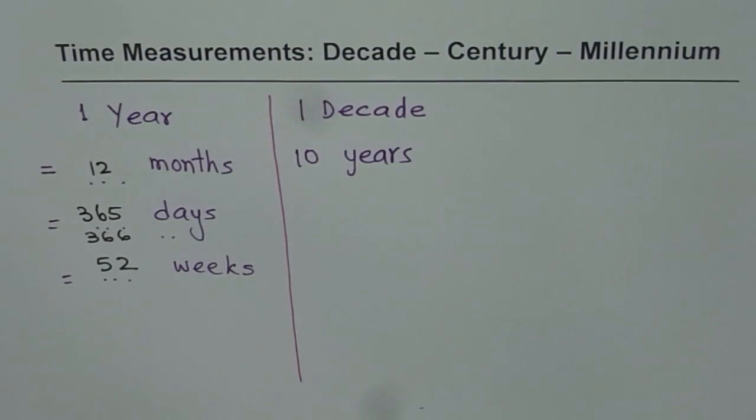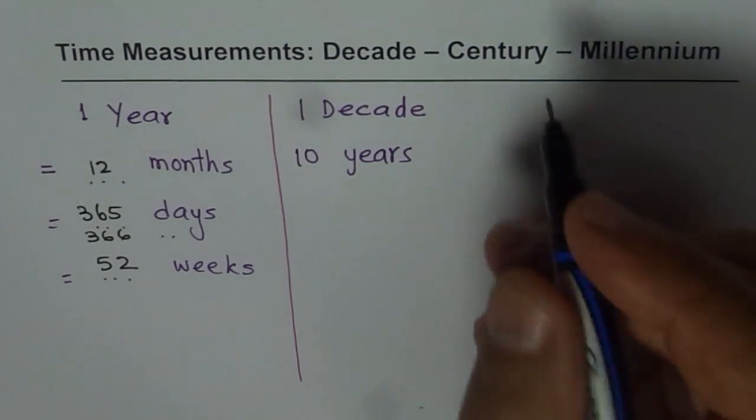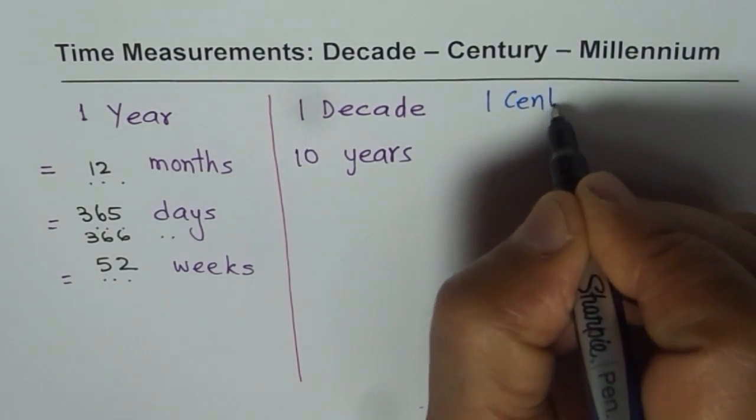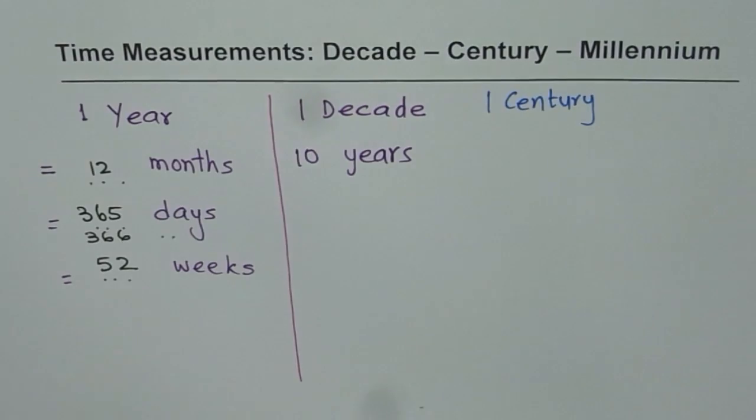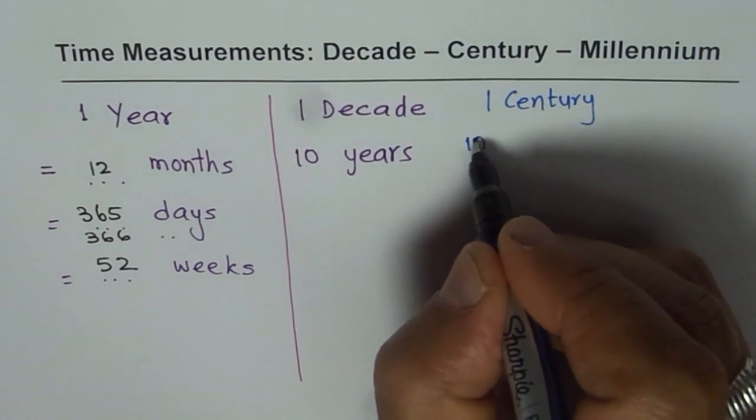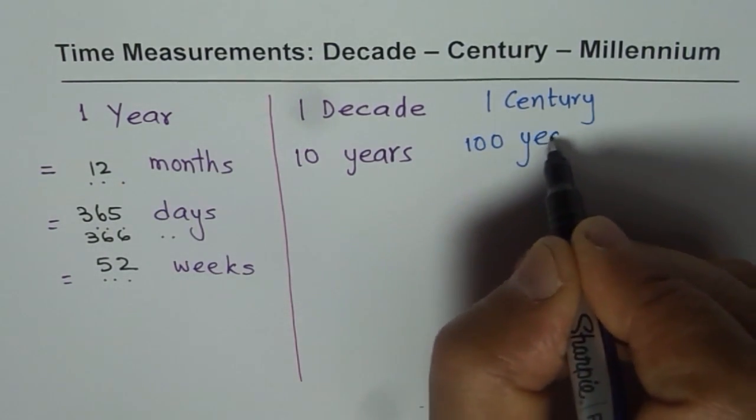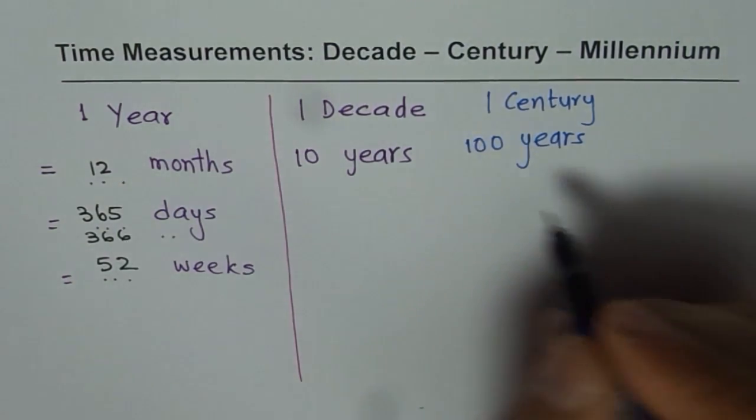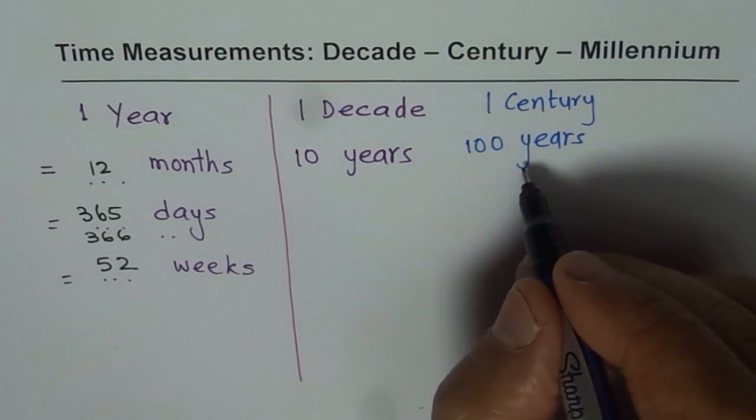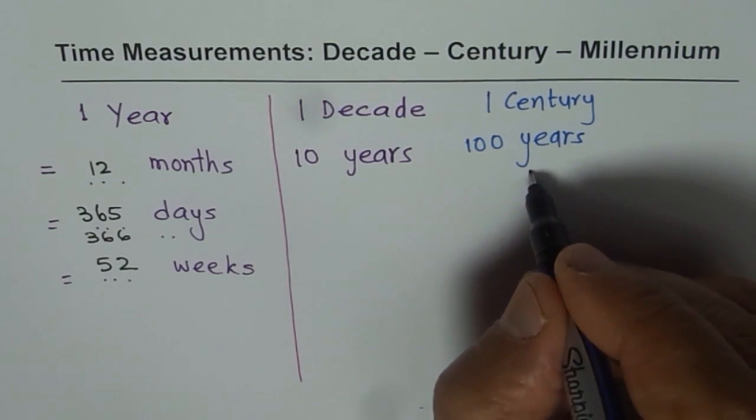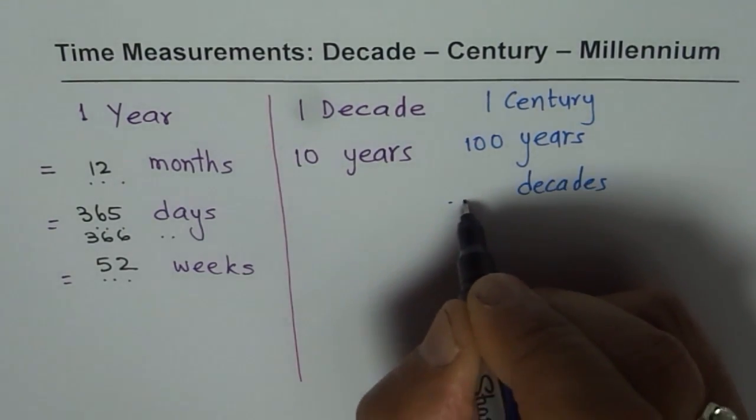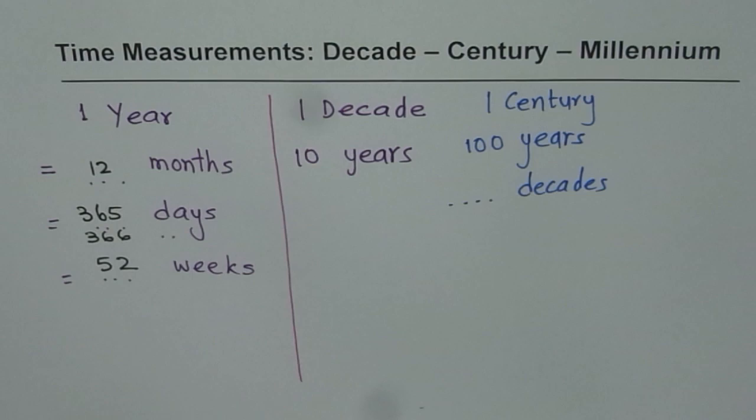How about one century? When we say one century, then with reference to years, it will mean 100 years. 100 years. Now it's for you to answer. If it is 100 years, how many decades? So think about it and write it down.